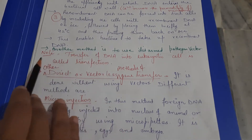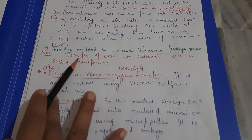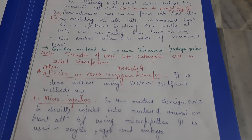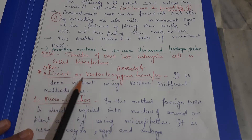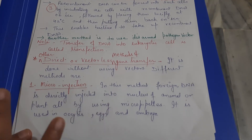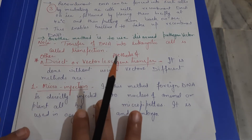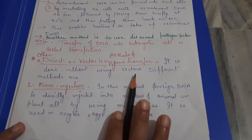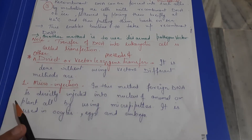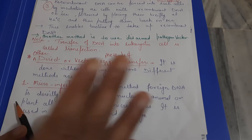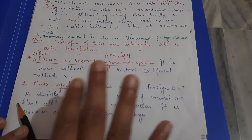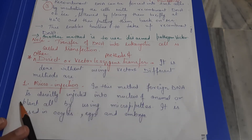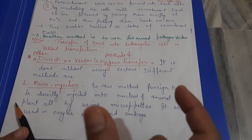The bacteria are now enabled to take up the recombinant DNA through this treatment. When we transfer DNA into a eukaryotic cell, specifically an animal cell, this process is called transfection. These are direct and vectorless methods. The vectorless method means we directly enter foreign gene into the host without using a vector.